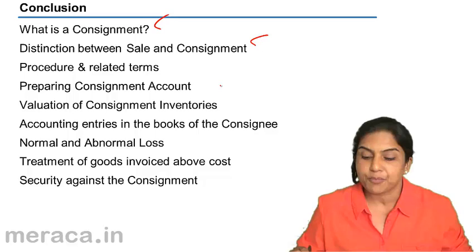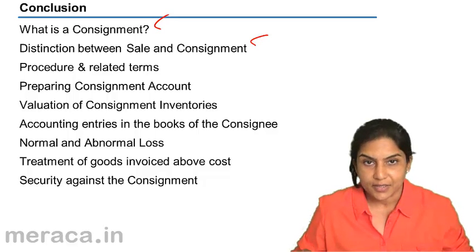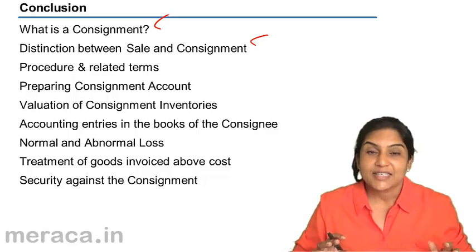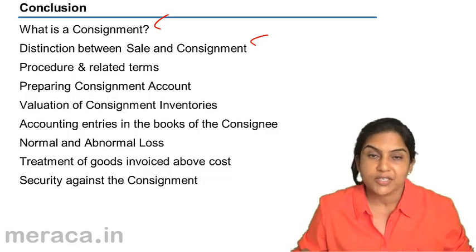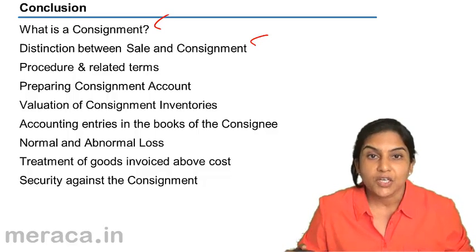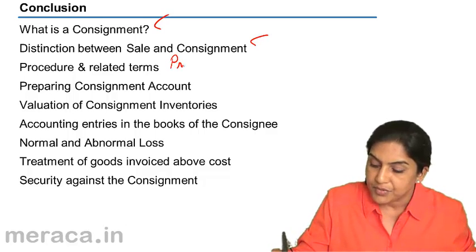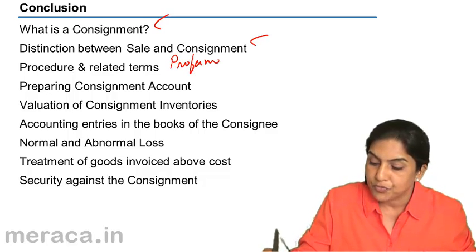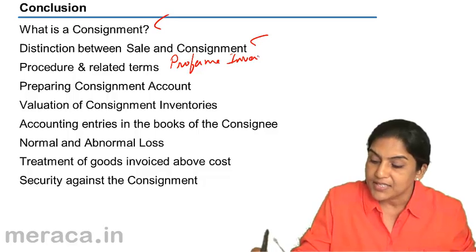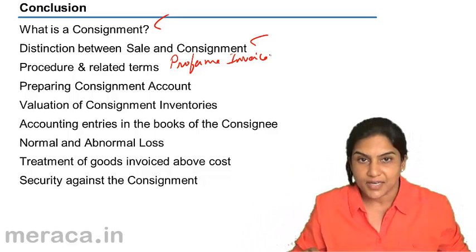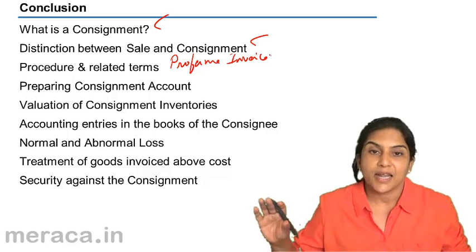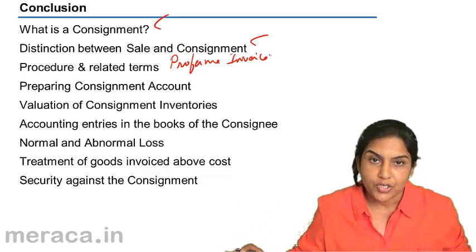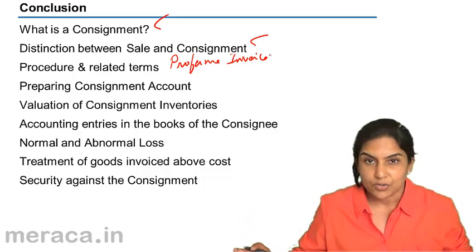Then we went on to understand the procedure and certain related terms. The consignor sends the goods to the consignee along with a proforma invoice, giving the details, description, and the cost of the goods sent. The consignee receives the goods and takes them to his warehouse or shop in order to sell them.